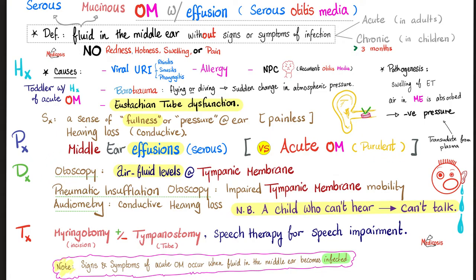How can I make the diagnosis clinically? Otoscopy can reveal air-fluid levels behind the tympanic membrane in the middle ear. Pneumatic insufflation otoscopy will show impaired tympanic membrane mobility because of the effusion. Conductive hearing loss could be detected on audiometry. Before audiometry, you can do the Weber test, Rinne test, and Schwabach's test with your tuning forks.